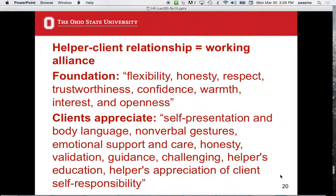The helper-client relationship is what Egan calls a working alliance, founded on flexibility and honesty. Honesty is really important — if you make a mistake, just say so, because they'll respect you for it. Respect the individual. Some engineers have a problem with arrogance; you've got to be careful about respecting someone who doesn't have technical abilities. That person sitting across from you could have a much higher IQ than you but have no technical abilities.